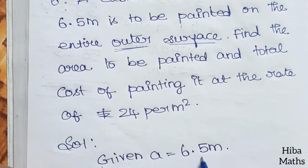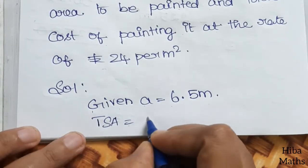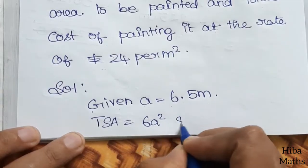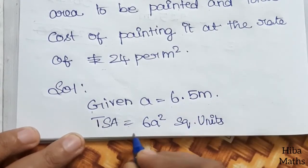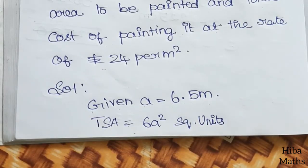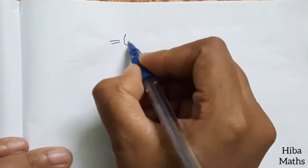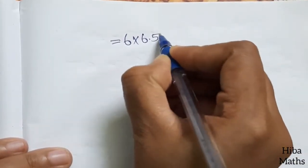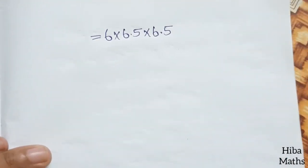Given A equals 6.5 meters. The TSA formula is 6 into A square units. We can replace A with 6.5, so 6 into 6.5 squared equals 6 into 6.5 into 6.5.